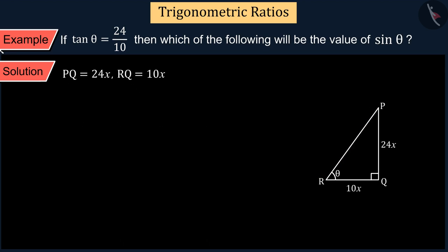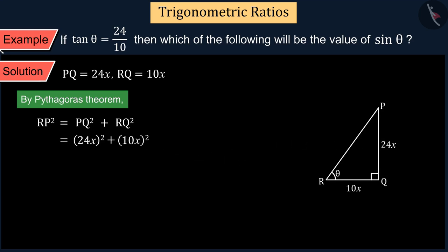We can calculate the value of side RP with the help of Pythagoras theorem, which is 26x units.